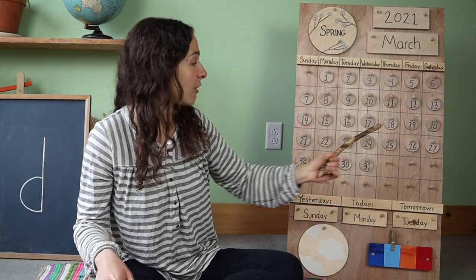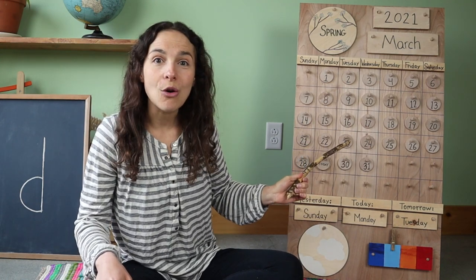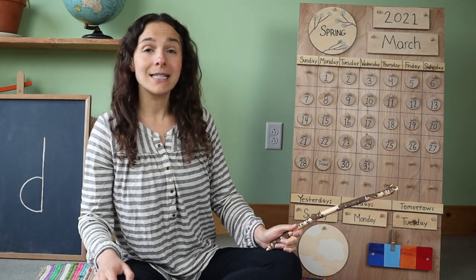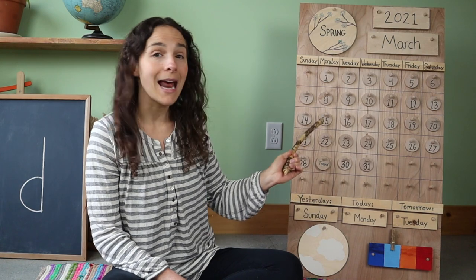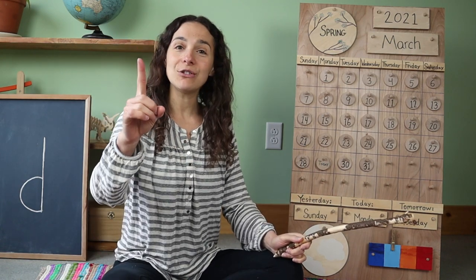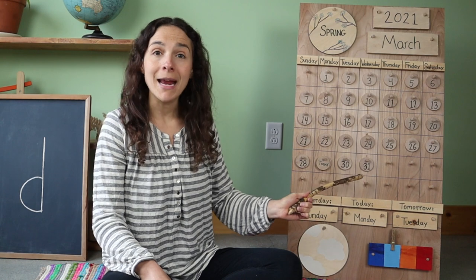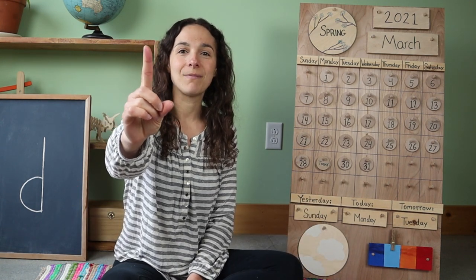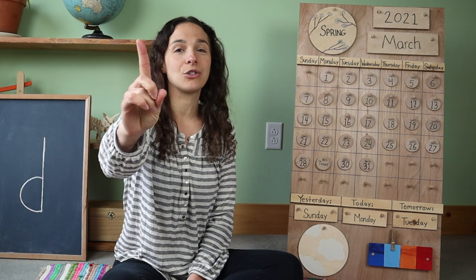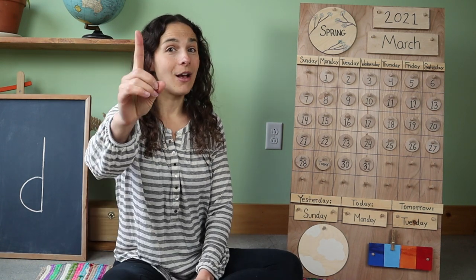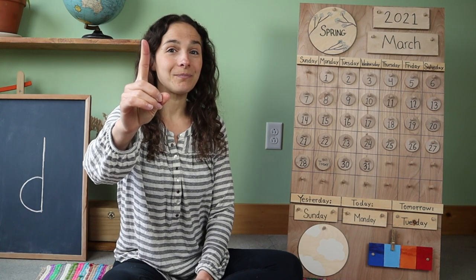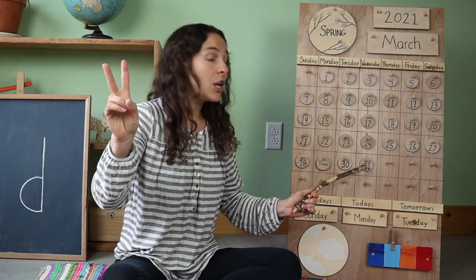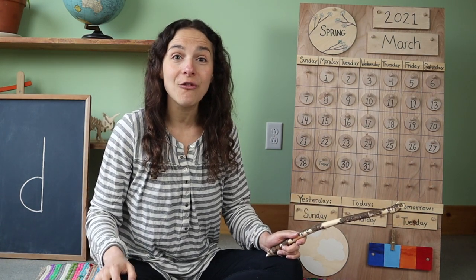Look at my calendar chart, friends. Do you notice that the month of March is almost over? So instead of counting all of the days that we've had in the month of March, let's use our counting fingers and count the remaining days that we have left in the month. Can I see your counting fingers like this? We don't have very many days to count. After today, we only have one, two more days left in the month of March.